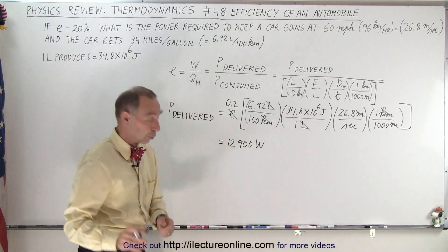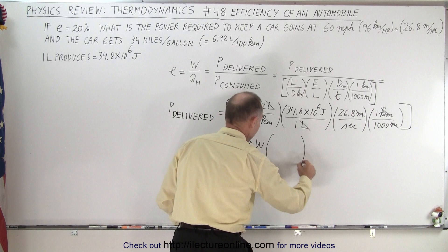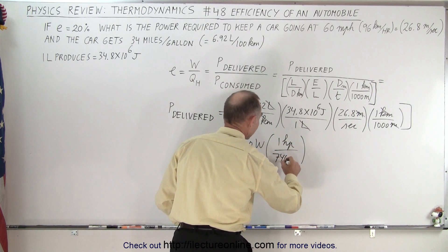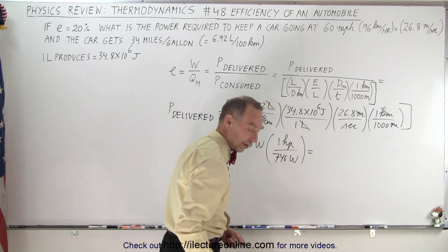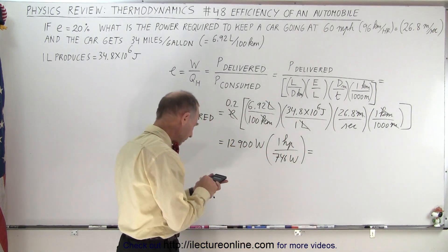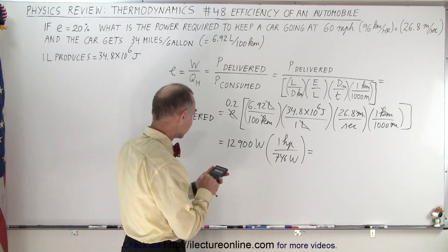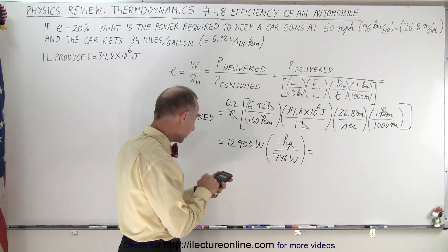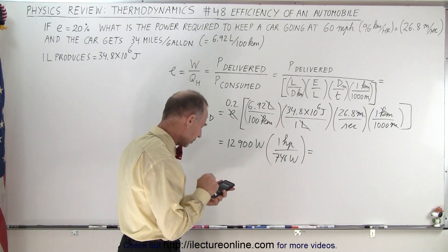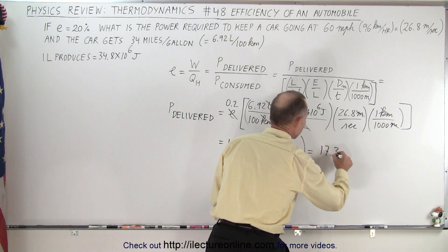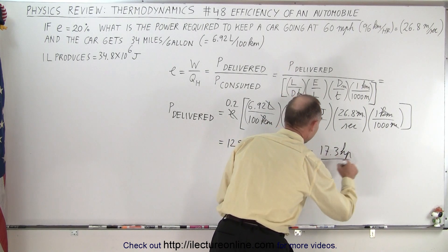Now, if we want to convert that to horsepower, one horsepower is equal to 746 watts. So divide that by 746, 12,900 divided by 746, that gives us about 17.3 horsepower. Now, that is the power delivered.